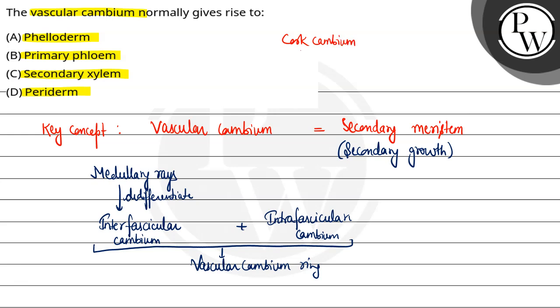Cork cambium jo hai ye ise phellogen bhi kehte hain. Ye bhi ek lateral meristem, ye secondary meristem ka hi part hai. Ye kya banata hai, outer side par ye banata hai cork jise phellum kehte hain aur inner side par ye banata hai secondary cortex jise hum kya kehte hain phelloderm.